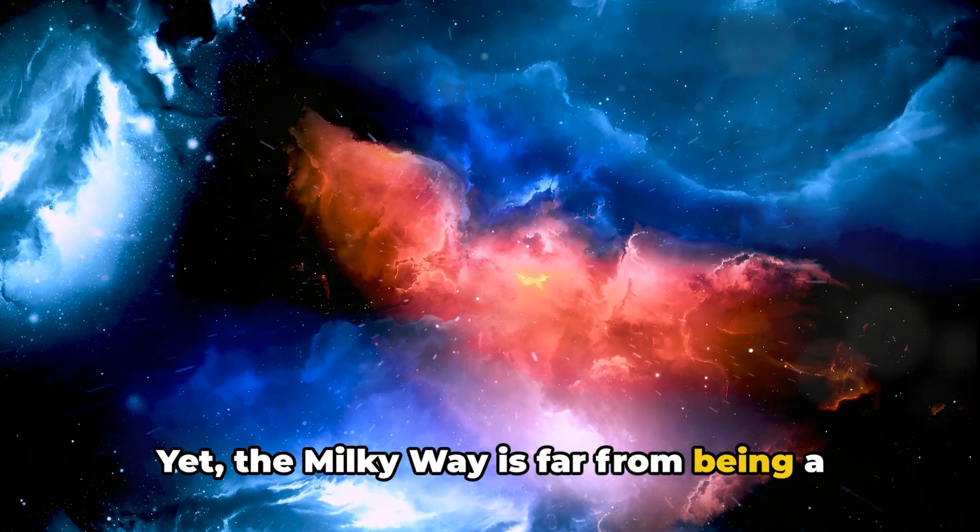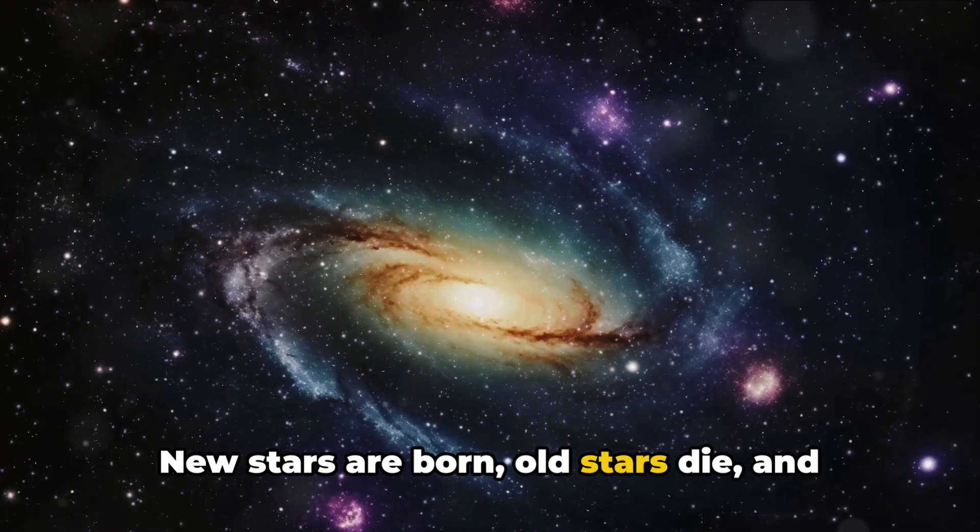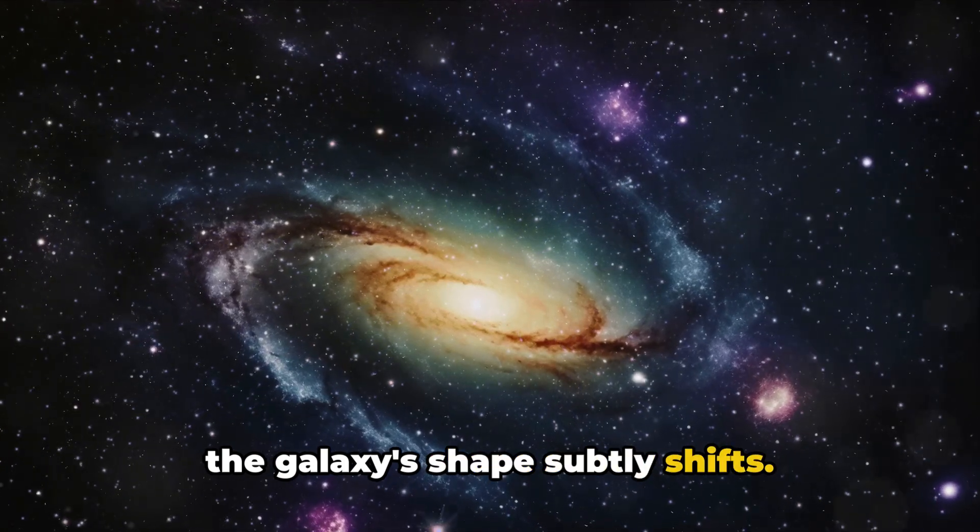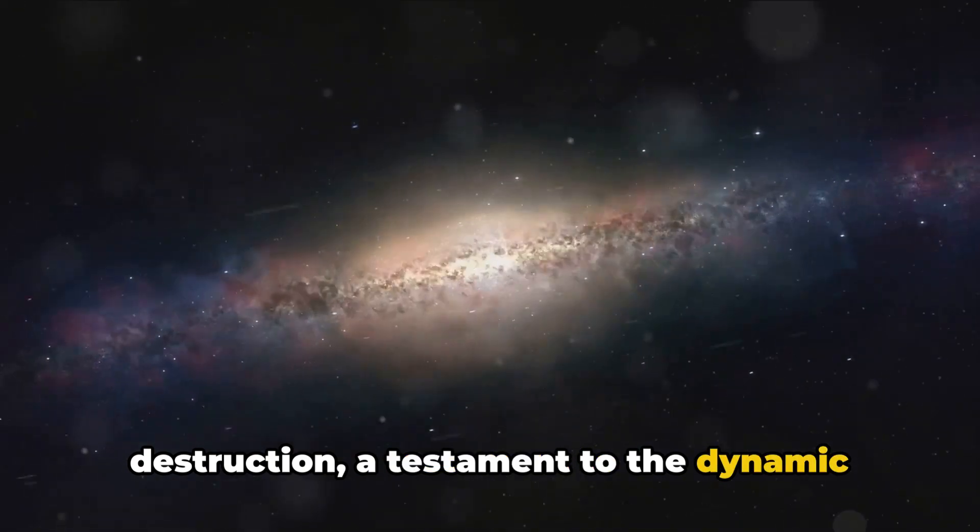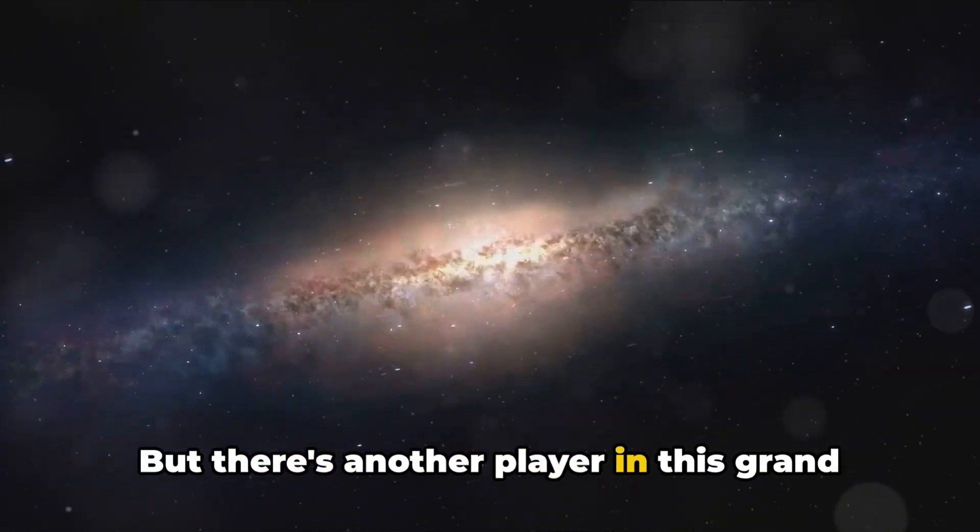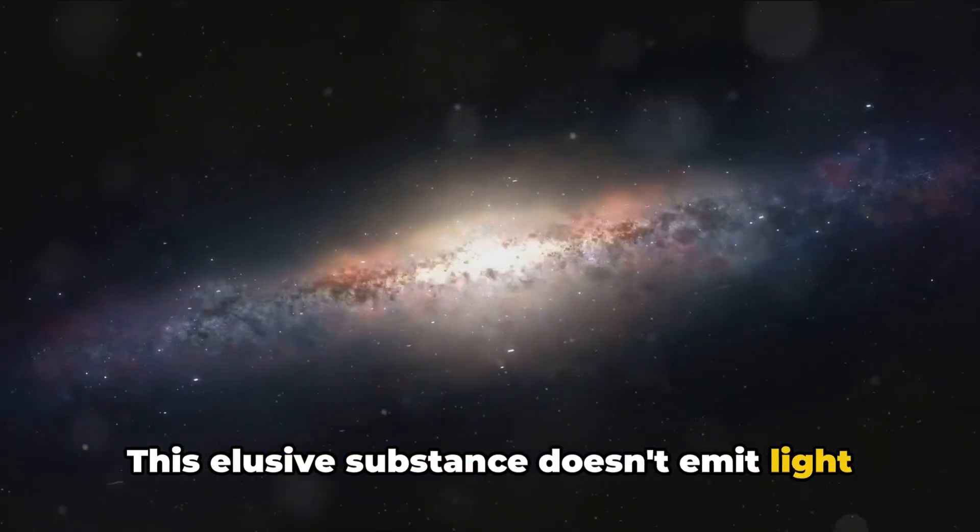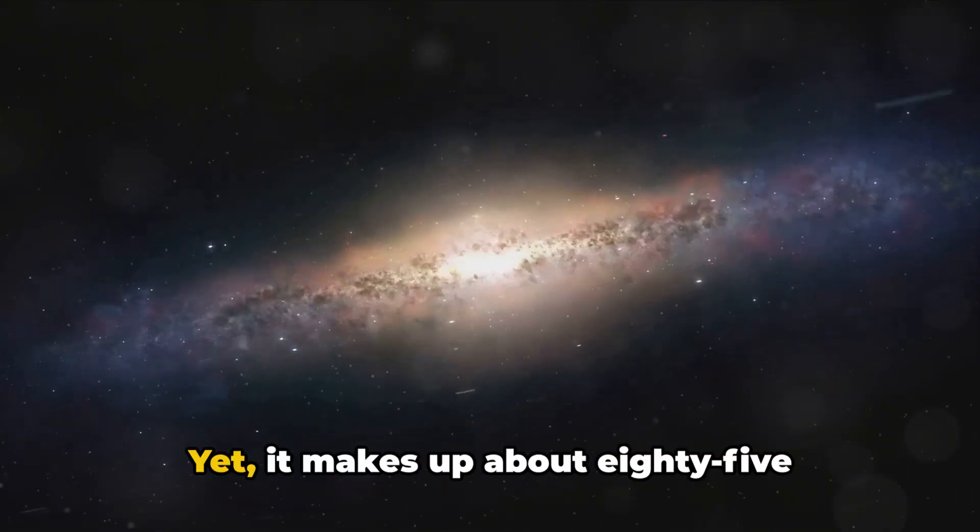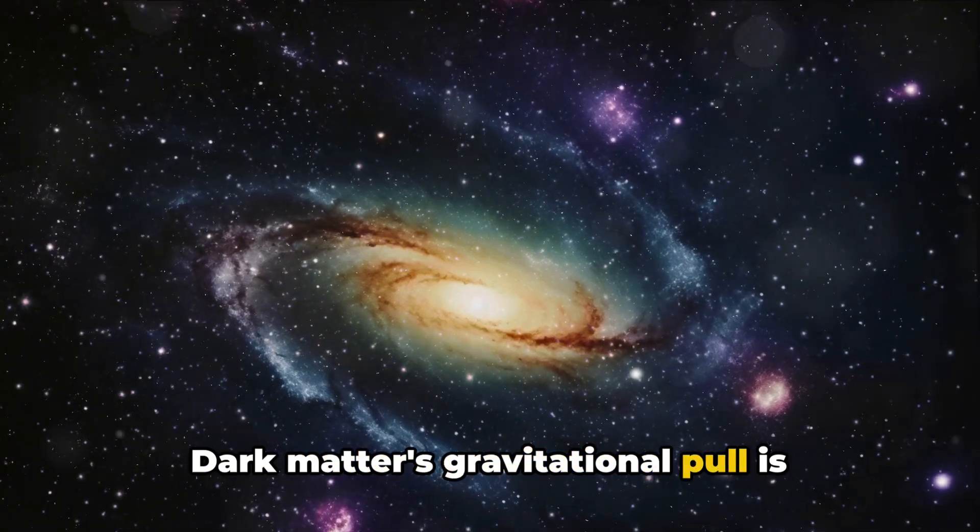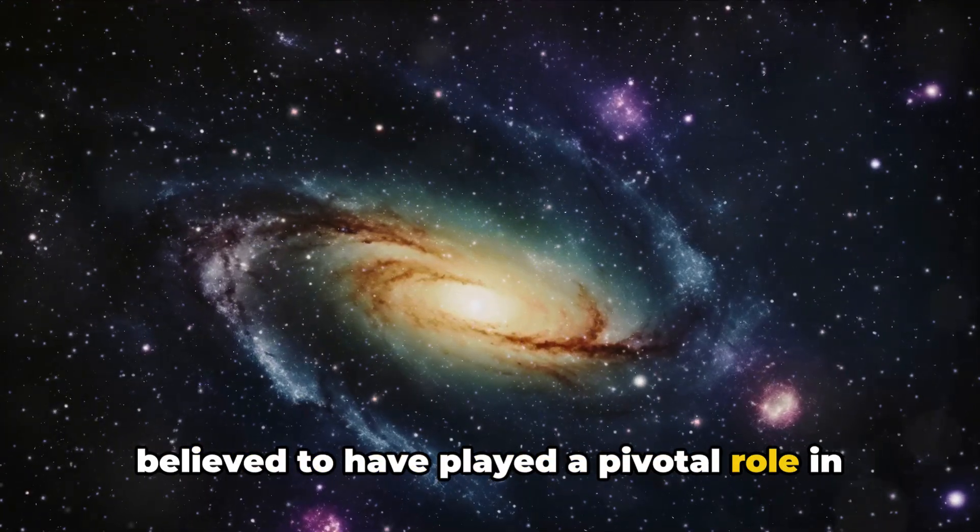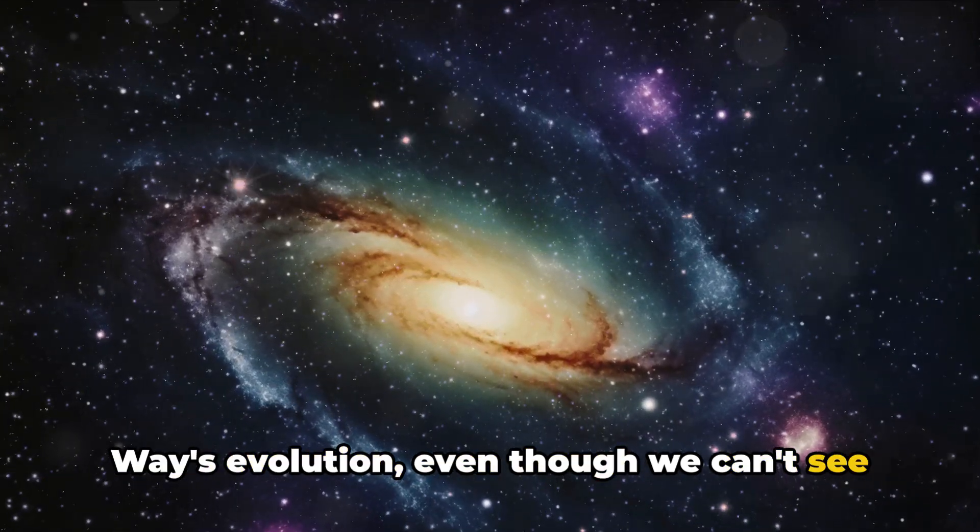Yet, the Milky Way is far from being a finished product. It continues to evolve and change. New stars are born, old stars die, and the galaxy's shape subtly shifts. It's a never-ending cycle of creation and destruction, a testament to the dynamic nature of our universe. But there's another player in this grand cosmic ballet, dark matter. This elusive substance doesn't emit light or interact with normal matter in any way we can see. Yet, it makes up about 85% of the universe's matter. Dark matter's gravitational pull is believed to have played a pivotal role in shaping our galaxy. It's the invisible hand guiding the Milky Way's evolution, even though we can't see it directly.